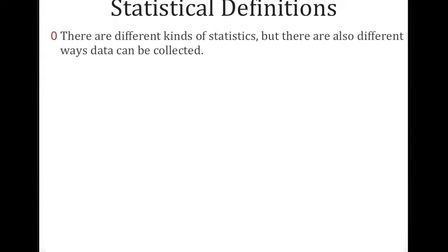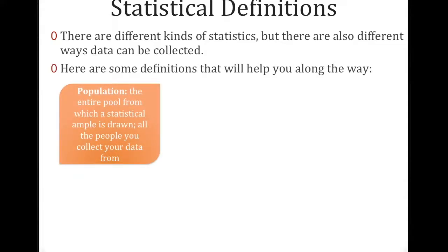There are different kinds of statistics, but there are also different ways that we can collect data. And here are some definitions that you will need for this. The first definition I'm going to show you is called population, the entire pool from which a statistical sample is drawn. It's literally all the people that you are basically asking data from.